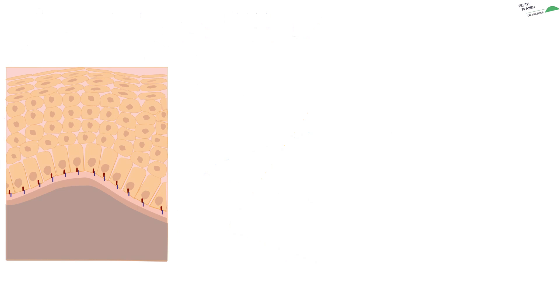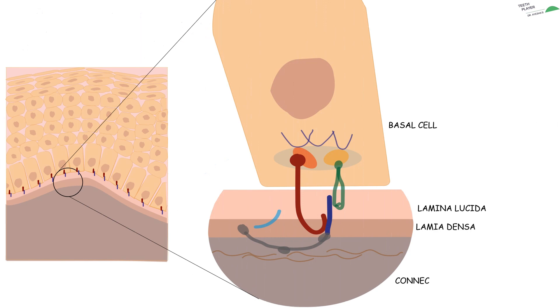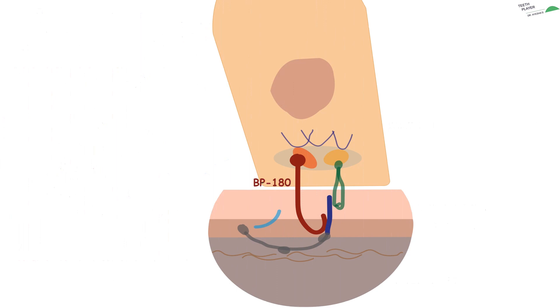Want to know what's going wrong? Let's get familiar with the normal basal cell attachment and basement membrane zone. The little red and blue lines we see are the hemidesmosomal attachments that bind basal cells to the connective tissue. This is your basal cell, lamina lucida, lamina densa, and the connective tissue. The red line represents BP180 and blue represents laminin 5, or epiligrin.